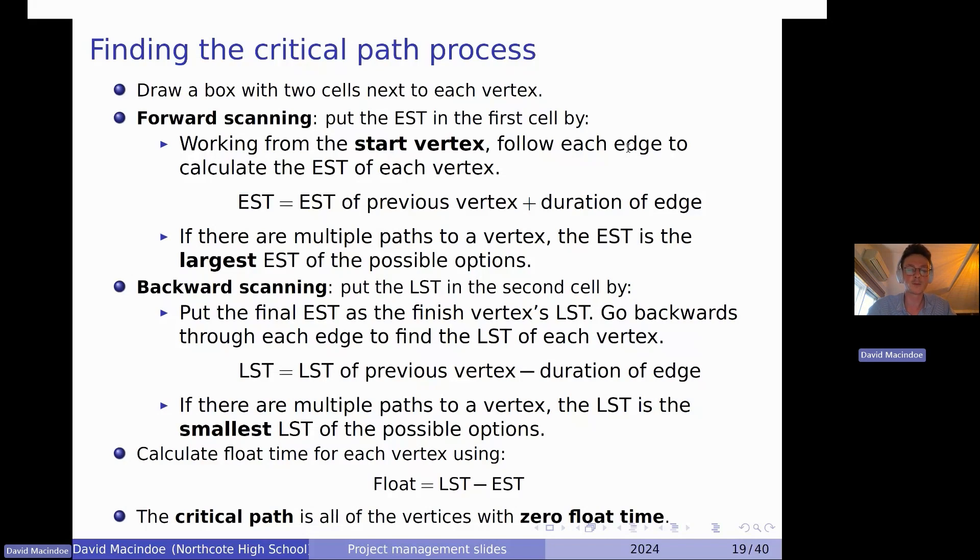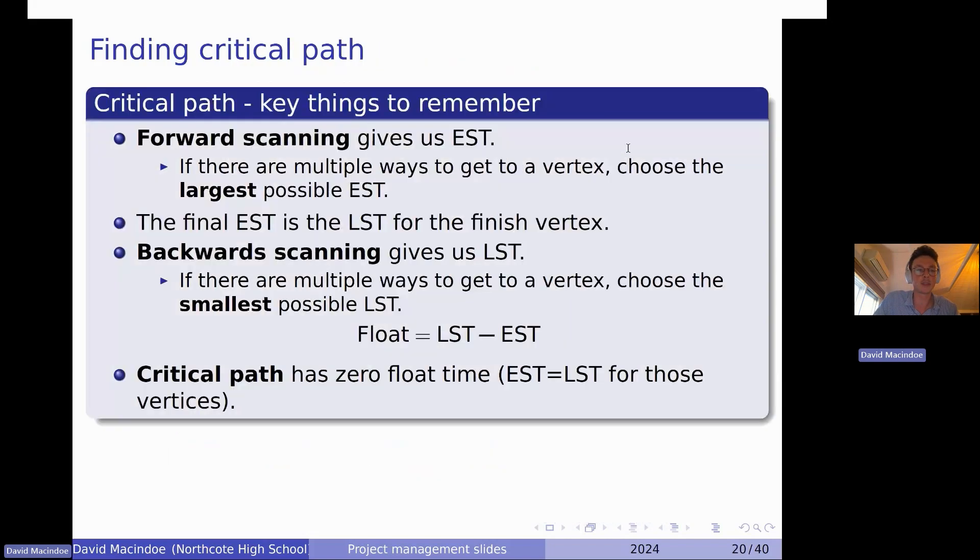I think the float time is pretty straightforward. You're just doing the LST for that vertex, take away the EST. Now, the critical path is the path that has no float time at all. So another way of thinking of it is really it's when the LST and the EST are equal, when they're the same. There's going to be no float time. I've also put this as probably what I'd have in my bound reference of just the key things to remember. I find the things that I forget is whether it's the largest or smallest when I've got the multiple paths coming together depending on whether I'm forward scanning or backwards scanning. So I'll keep that just as a quick reference for myself during the exam.